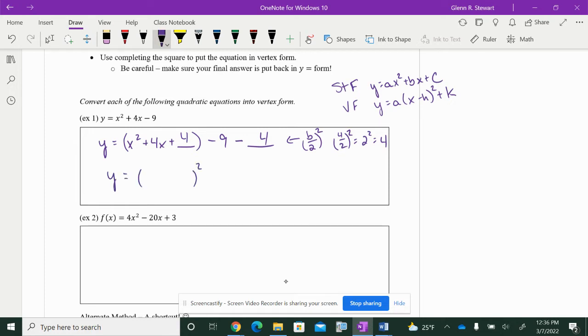Then, our next thing is, what's going to multiply to give us 4, add to give us 4, that's 2 and 2, or essentially just our b over 2 value. And, negative 9 minus 4 is 13, and we're done. So, now we can find our vertex, and then all of our other points.